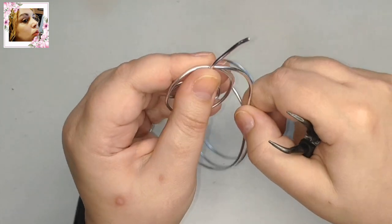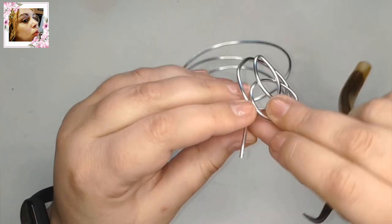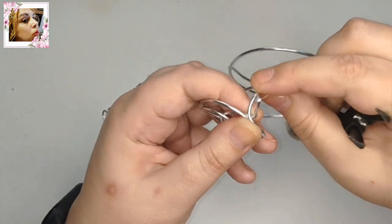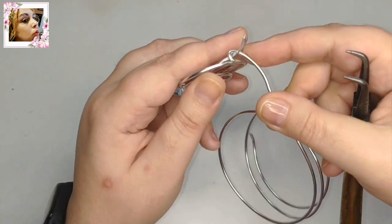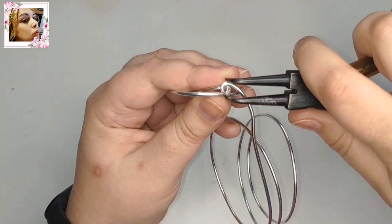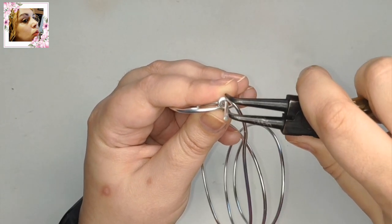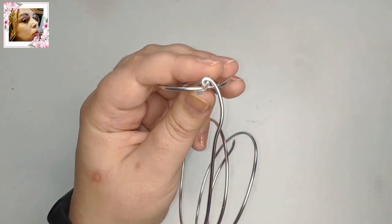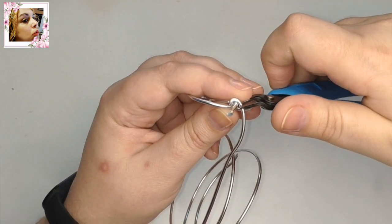And now we only need to wrap around the axis where the ring will go to hang it. With just one turn in this case is enough, a turn that we will adjust very well, press with the pliers, and now we can cut there and finish adjusting.